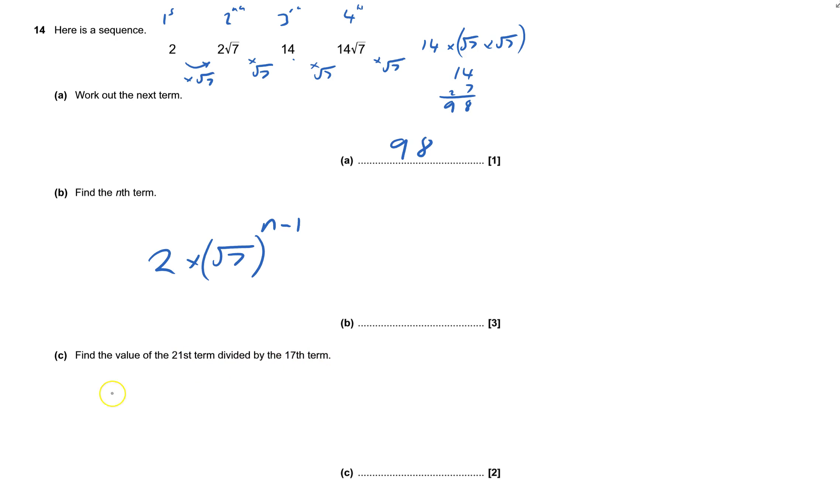Find the value of the 21st term divided by the 17th term. It's geometric, so it doesn't actually matter which one I've got. So I could consider that to be the 17th term, so 17th, 18th, 19th, 20th...